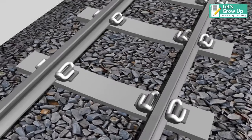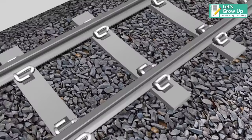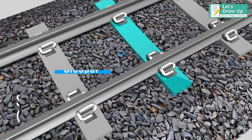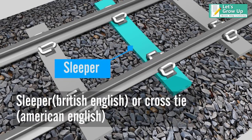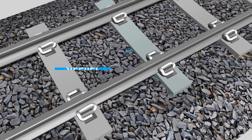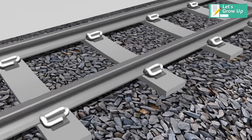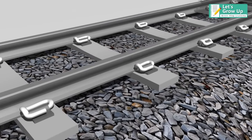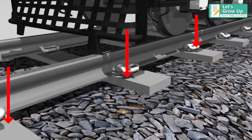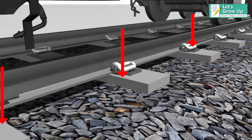The wooden or concrete supports for the rail tracks are known as a sleeper — sleeper in British English, or cross-tie in American English. It is a rectangular support for the rail tracks, laid perpendicular to the rails. Sleepers transfer loads to the track ballast and subgrade, and hold the rails upright while keeping them spaced to the correct gauge.